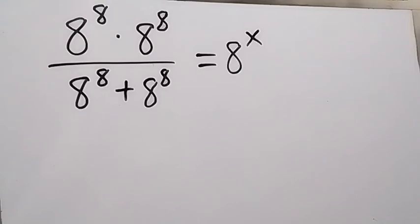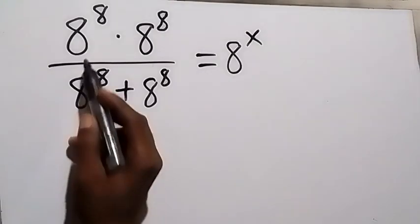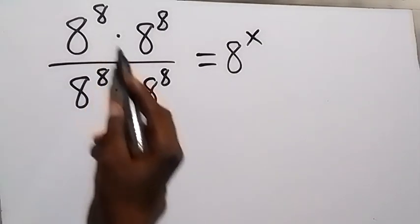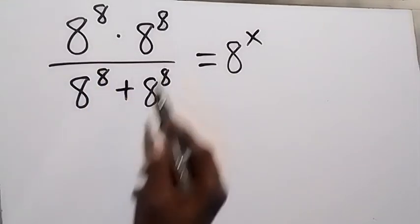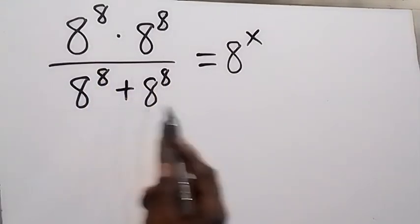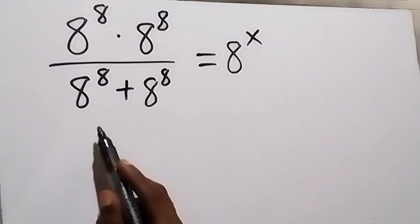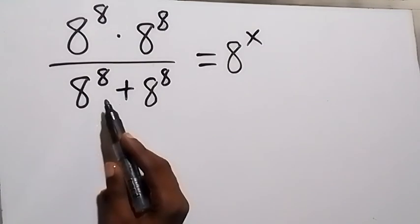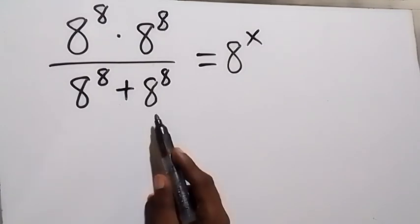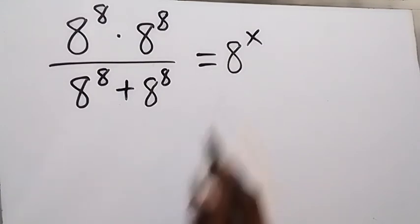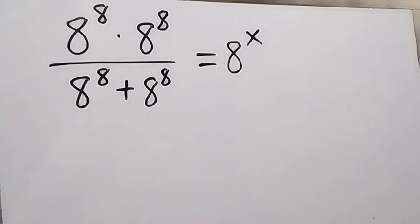Hello, you are welcome. How to solve this problem: 8 raised to power 8 times 8 raised to power 8, divided by 8 raised to power 8 plus 8 raised to power 8, equals 8 raised to power x.